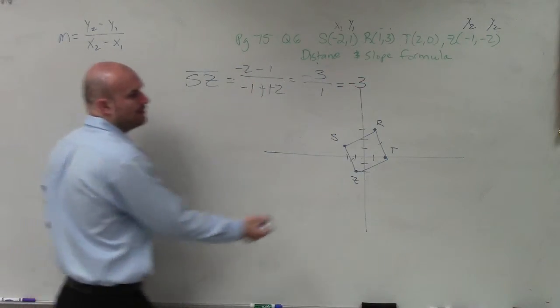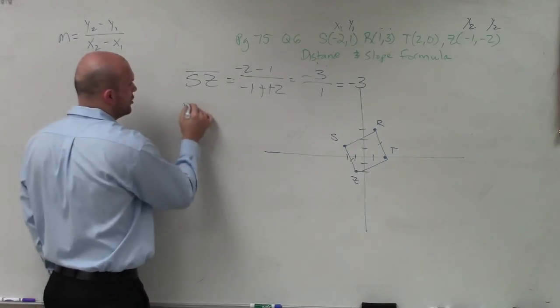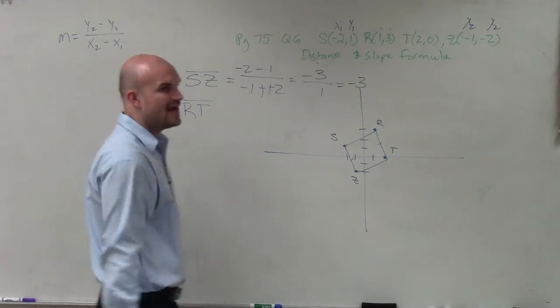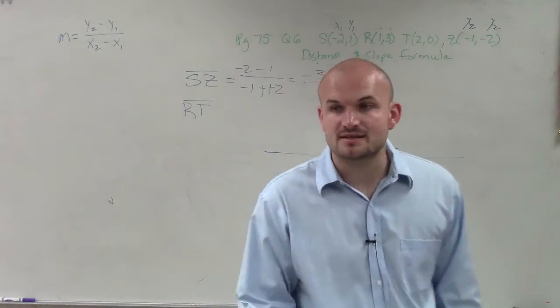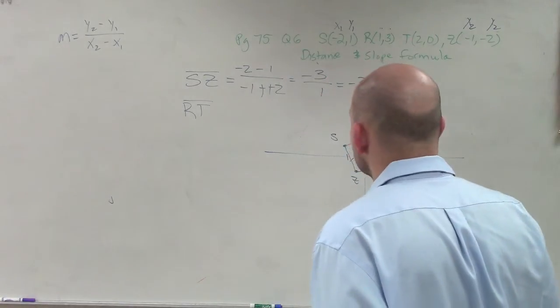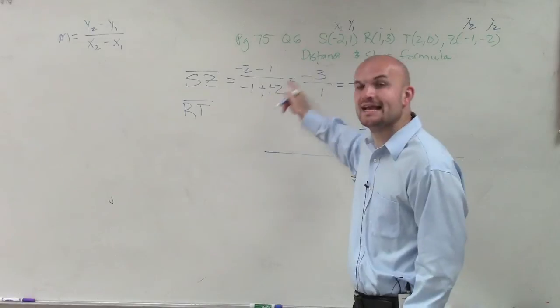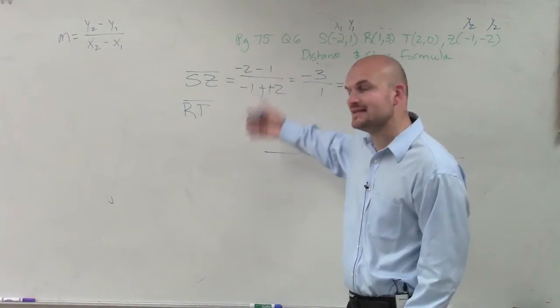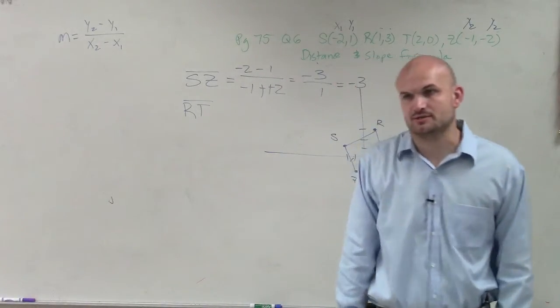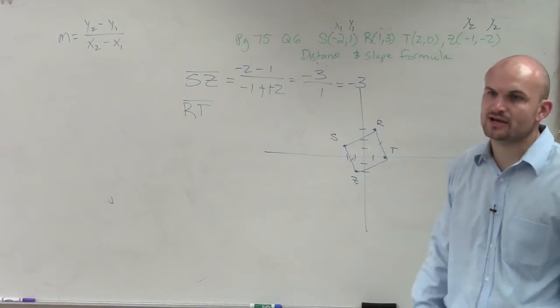So now what we want to do is determine, does the line RT have the same slope? Yes? Are you adding 2 minus, I mean, 2 plus some? Yeah. What it was was negative 1 minus a negative 2. When you have minus and negative, you can convert that to addition. All right? So that's why I converted that to a positive.